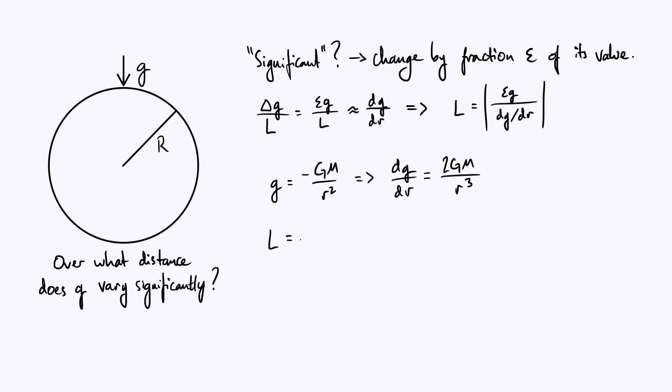L is going to be, let's keep our epsilon at the front, then we've got the g on top of the fraction. Let's just write that as GM over r squared because as we said we don't really care about the signs. Then we've got dg by dr on the bottom, so we're going to take this and flip it upside down, turn it into r cubed over 2GM.